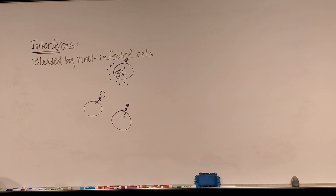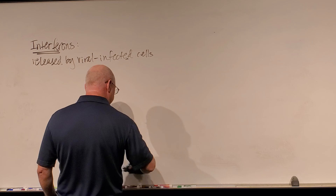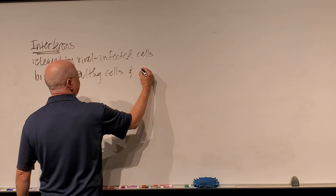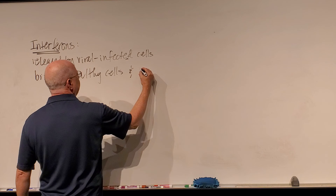Once a cell is infected with a virus and releases interferons — and if a macrophage is affected, macrophages can really dump a lot of interferons — those interferons can diffuse to neighboring cells and bind to them, disrupting or interfering with the virus's ability to bind to a new cell. Viruses can bind to certain proteins on the surface of cells and inject their DNA, and interferons can mess with that process.